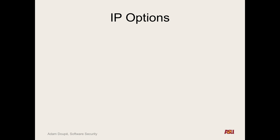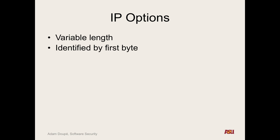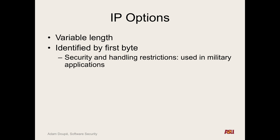So the IP headers include the options section, and this is variable in length — it can get more or less. They're identified so the first byte defines what option it is and then it could have an optional length after that. Anybody in security or military operations know if they actually use this byte still? The IP options.